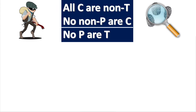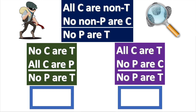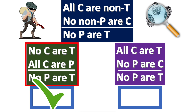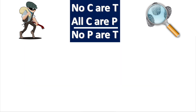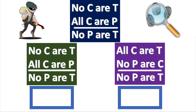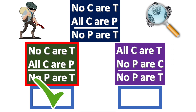Next, reduce the number of terms by eliminating the negations. This is the correct reduction. Next, choose the syllogism that is in standard form. This one is in standard form because the major premise is first.